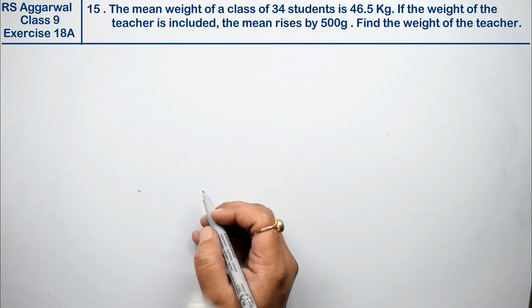Let's do question number 15 of exercise mean, median and mode of ungrouped data. Question number 15 is: the mean weight of a class of 34 students is 46.5 kg.